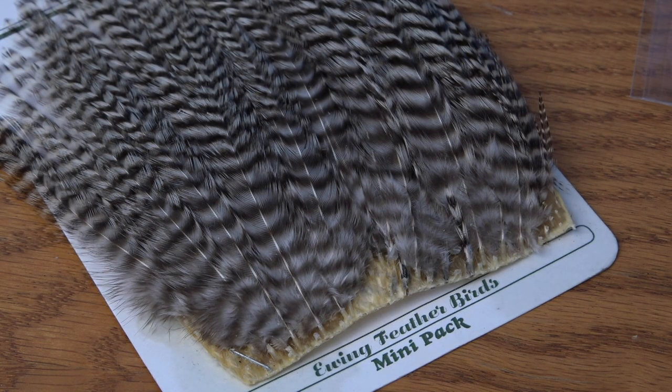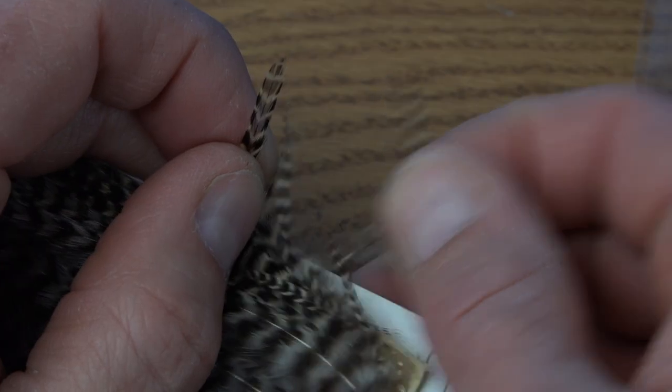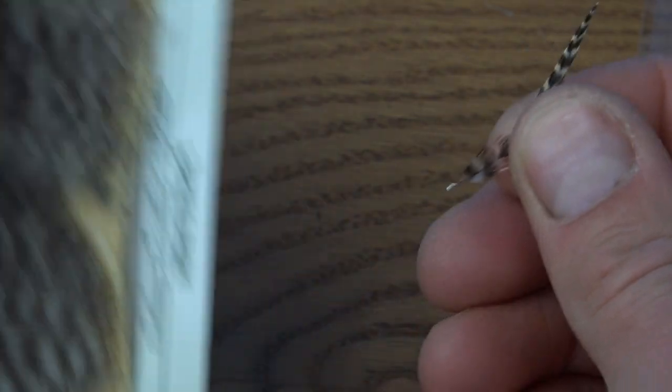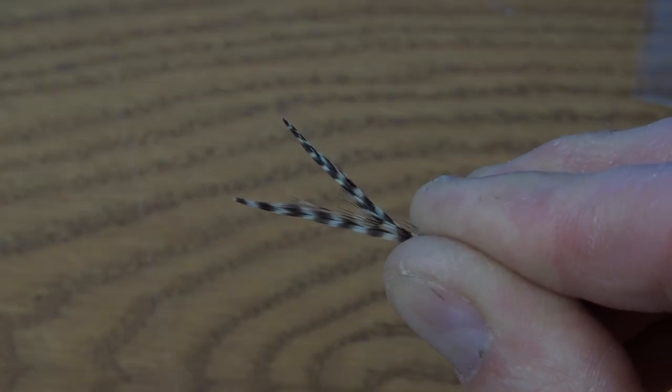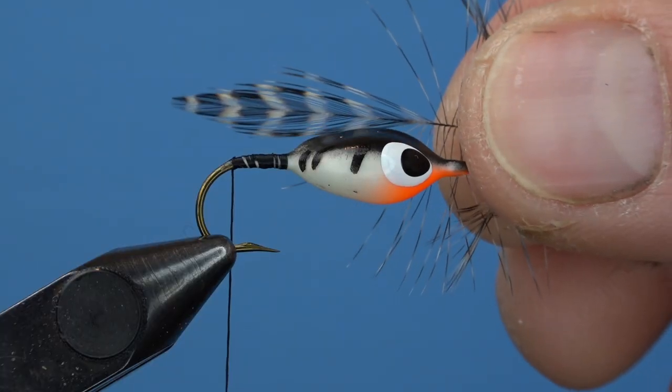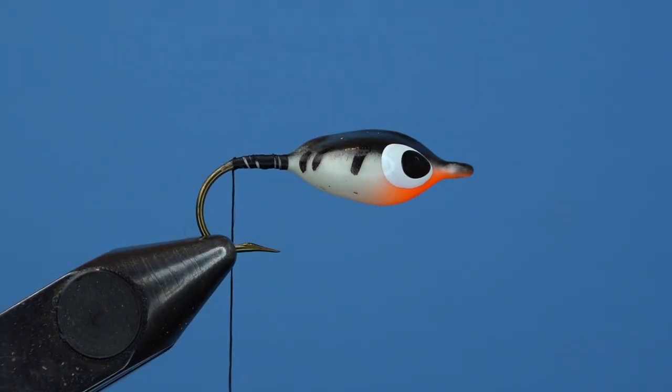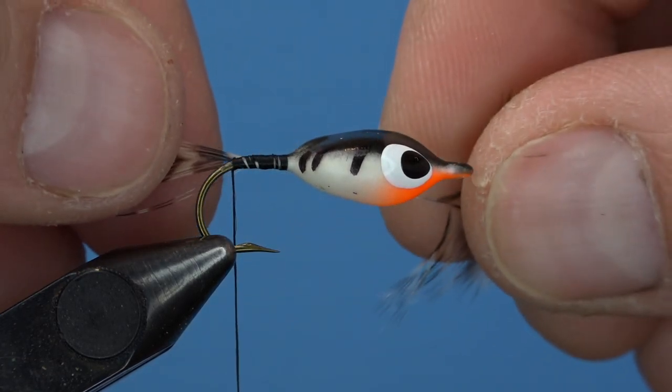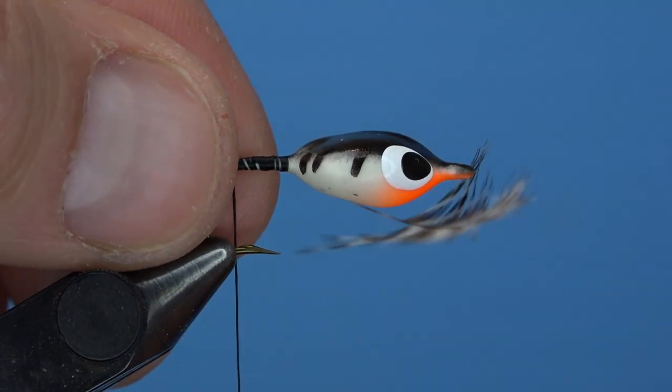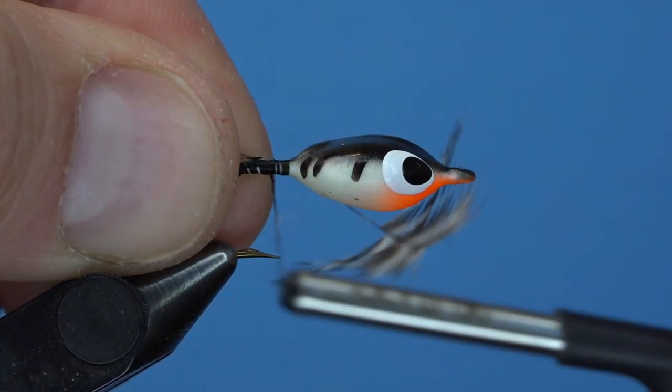Then reach for a grizzly mini dry fly hackle pack. We're going to find a few feathers that are of equal size, and make sure that we put them together so the curvature of the feather is pointing away from each other, just like we would a deceiver style fly pattern. My tails are going to be about the same length as the hook shank, and I'm going to strip off those little hackle fibers that aren't being used off the backside for the tail.